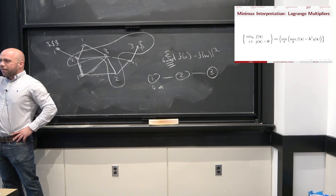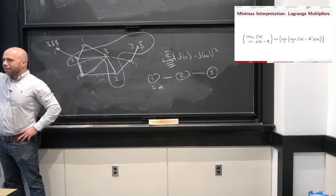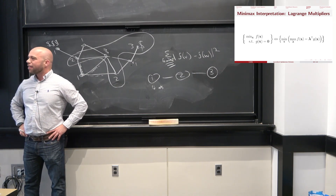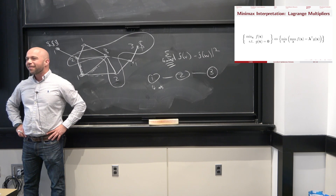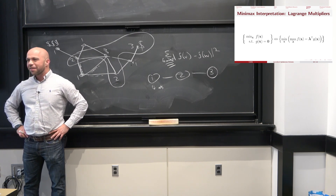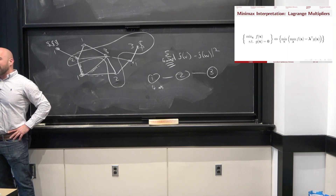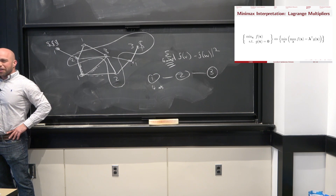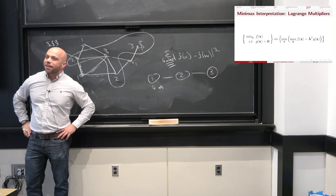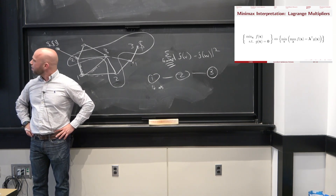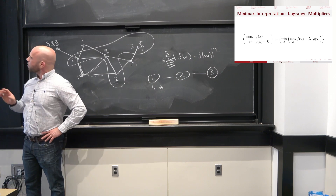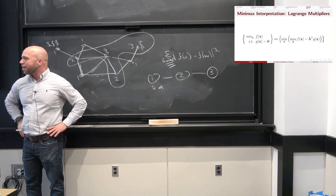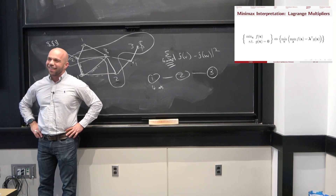As a reminder: if x does not satisfy the constraint, the optimal value of the inner max over lambda is infinity, because g(x) is not zero and I multiply it by lambda and maximize over unconstrained lambda. On the other hand, if x does satisfy the constraint, g(x) is zero, so no matter what lambda I use I just get f(x). These two problems are equivalent in the extended real numbers — the real numbers plus infinity.